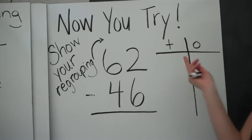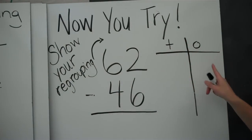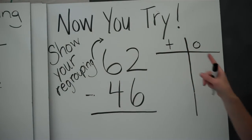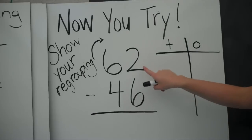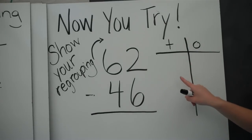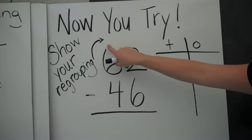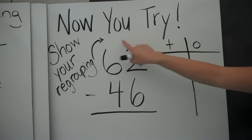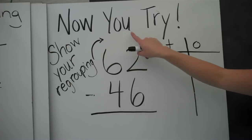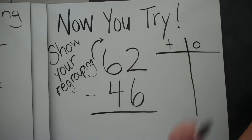Now you try! Remember to draw your place value blocks, and if you don't have enough ones, you're going to regroup your tens. Make sure you're showing your regrouping in your problem. Give it a try!